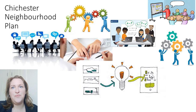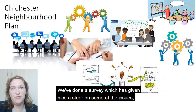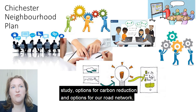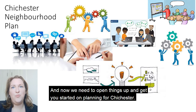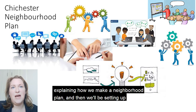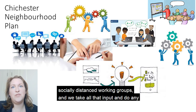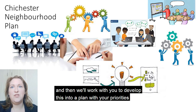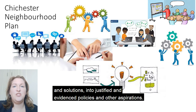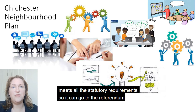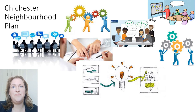We'll take you through the process from start to finish. We've done a survey which has given us a steer on some of the issues and we're following those up with some technical work: a trees and green spaces study, options for carbon reduction, and options for our road network. Now we need to open things up and get you started on planning for Chichester. We're releasing our online training soon on our website and Facebook page explaining how we make a neighbourhood plan, and then we'll be setting up socially distanced working groups. We'll take all that input and do any technical work like collating data or getting any specialist reports, and then we'll work with you to develop this into a plan with your priorities and solutions, into justified and evidence-based policies and other aspirations. We'll make sure the finished plan covers everything it needs to and meets all the statutory requirements, so it can go to the referendum and you can vote to adopt it.